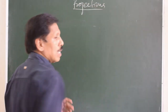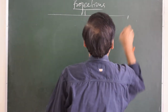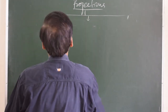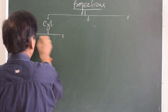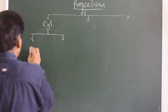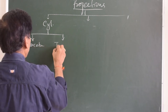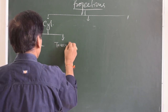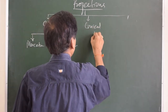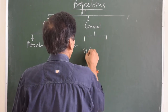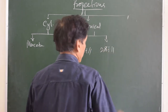Let us understand these projections with the help of the light-and-shadow principle. There are two types of cylindrical projection: Mercator projection and transverse Mercator projection. For conical projections, there are one-standard-parallel and two-standard-parallel conical projections.